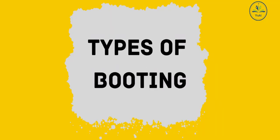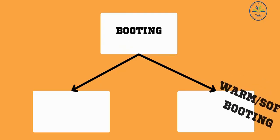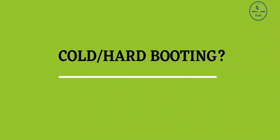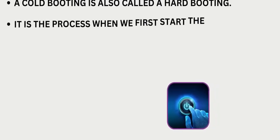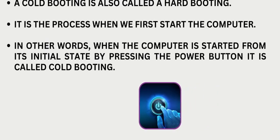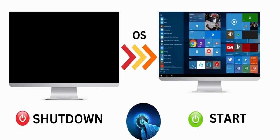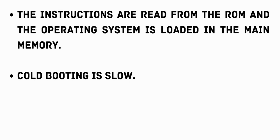Now let's learn about the types of booting. There are two types: cold booting or hard booting, and warm booting or soft booting. Cold booting, also called hard booting, is the process in which we first start the computer from its initial state by pressing the power button. Here, instructions are read from the ROM and the operating system is loaded into main memory. Cold booting is slow because the operating system has to be fully loaded into main memory during cold booting.